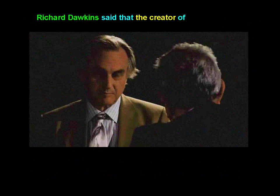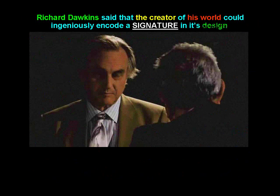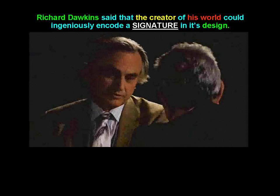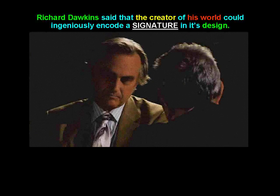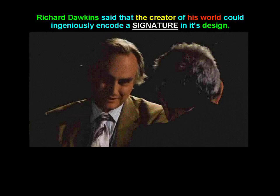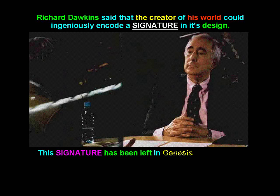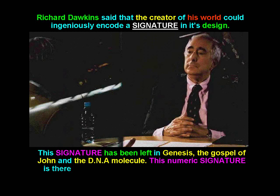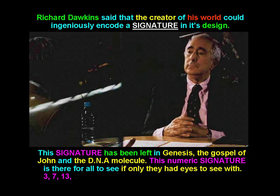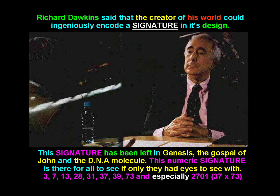Richard Dawkins said that the creator of his world could ingeniously encode a signature in its design. The signature has been left in Genesis, the Gospel of John, and the DNA molecule. This numeric signature is there for all to see, if only they had eyes to see with. The key numbers are: 3, 7, 13, 28, 31, 37, 39, 73, and especially 2,701 — which is 37 by 73.